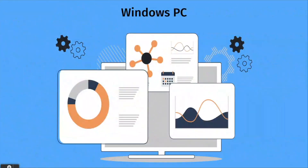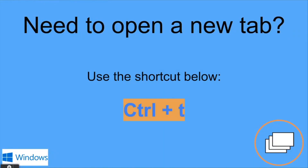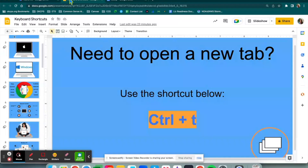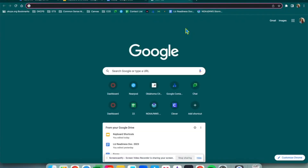We're going to first start with a Windows PC. If you need to open a new tab, you're going to use this shortcut. Go ahead and look at your keyboard — you're going to find two buttons: the Control button and then the letter T. That's the shortcut you're going to use. When you're in a window with different tabs at the top, or maybe just one tab, and you want to open a new tab, Control then T on your keyboard opens up a new tab for you.